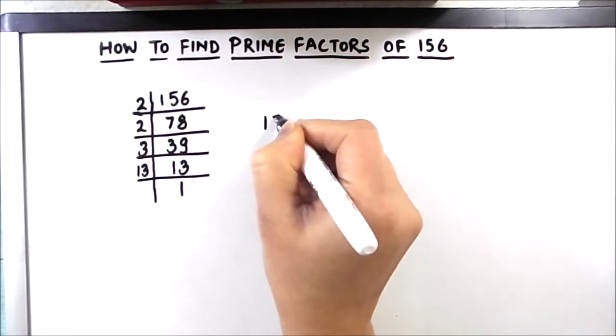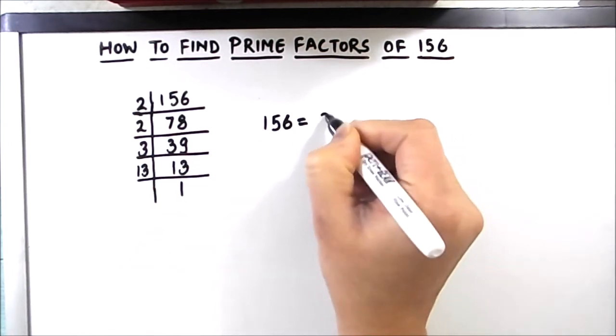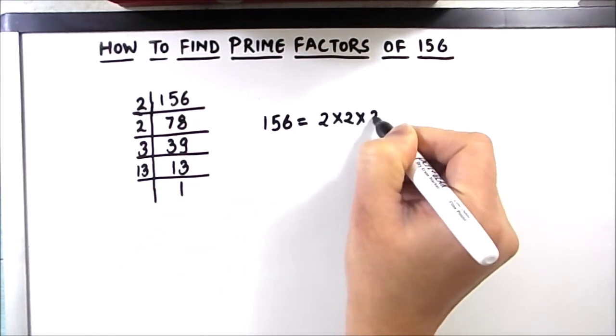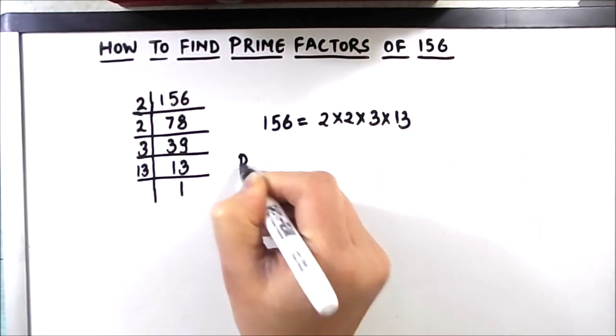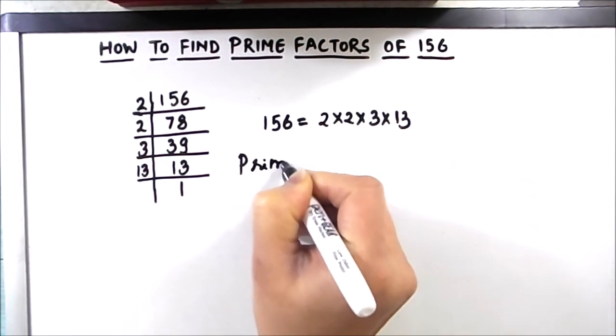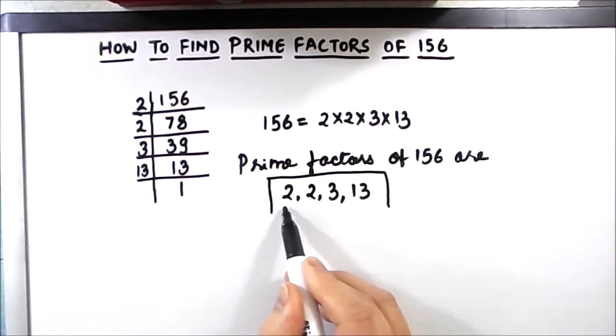We are going to write 156 as the product of its prime factors as 2 times 2 times 3 times 13. So the prime factors of 156 are 2, 2, 3 and 13.